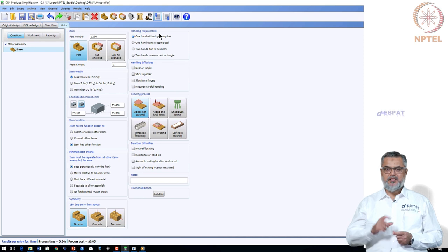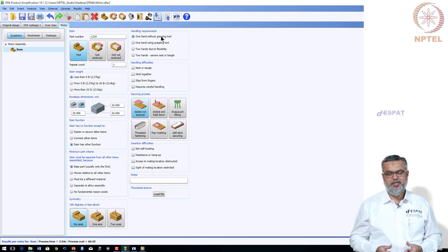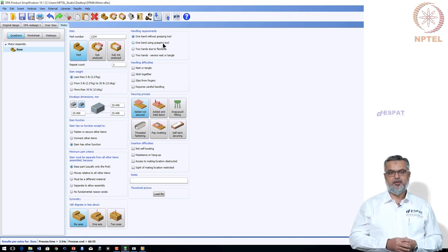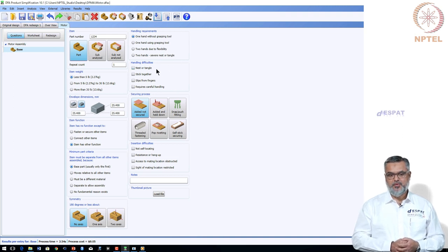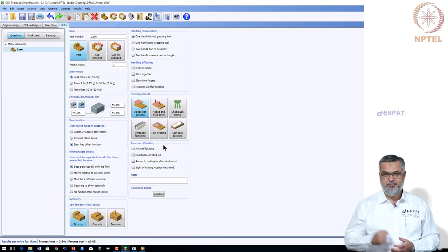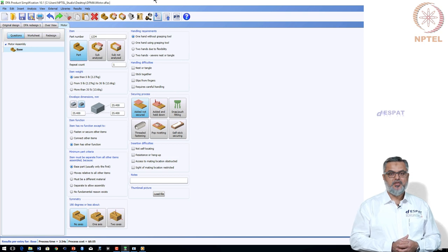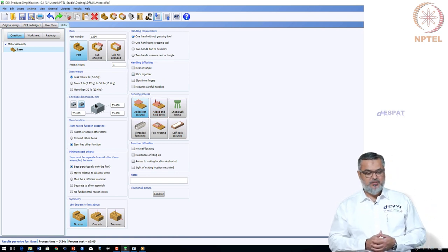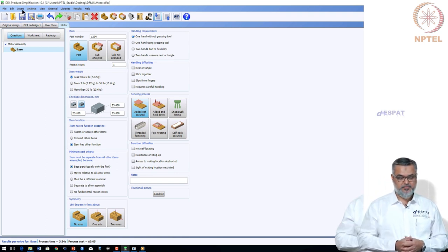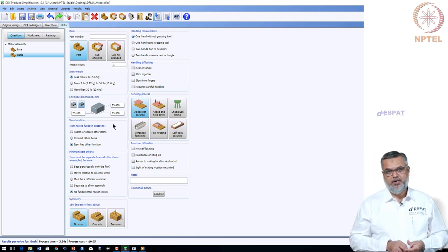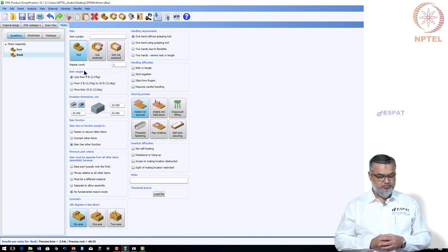The next set of questions asks how the operator interacts with the part. Two things happen: the operator handles the part to bring it to the assembly point, and then inserts it into the product structure. So there are questions about handling difficulties, handling requirements, securing process, and insertion difficulties. For the base component, it is easy to handle with no handling requirements. As it is the first part, it will be secured later, and there are no insertion difficulties.